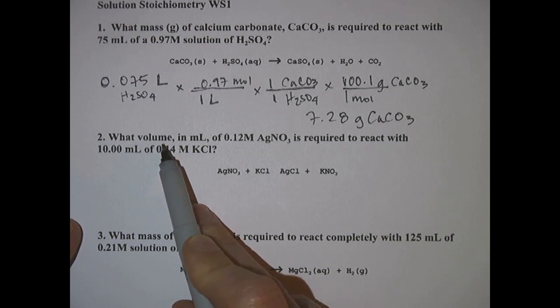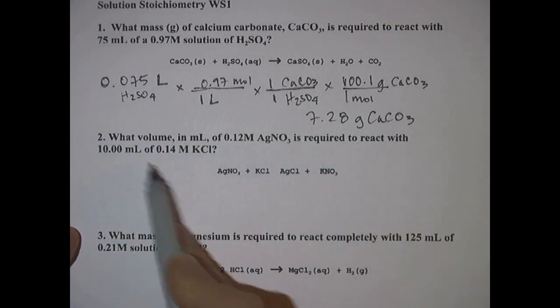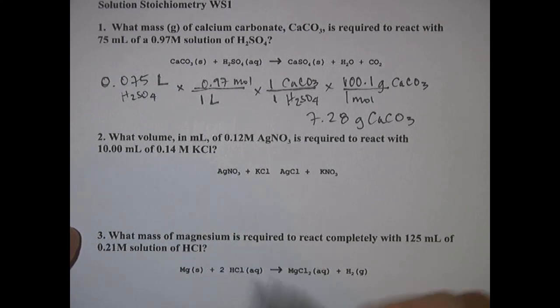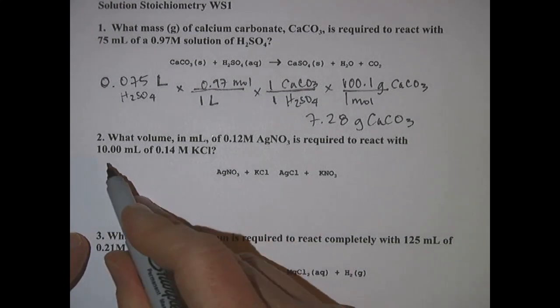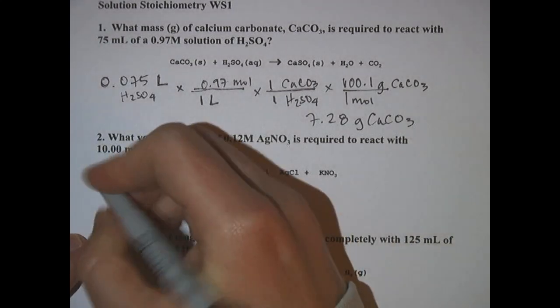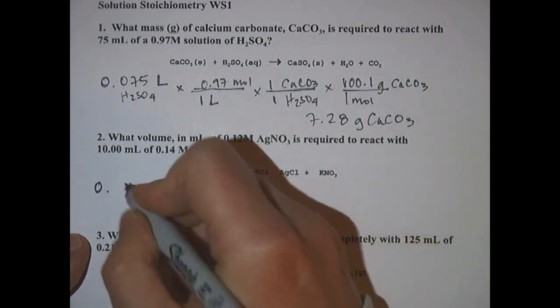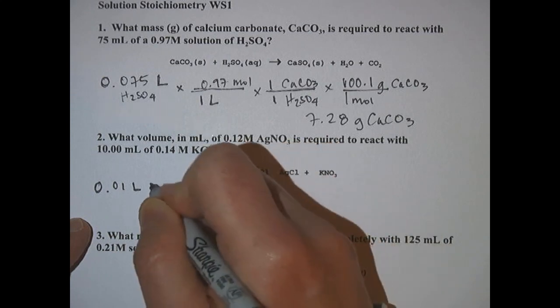Next problem: what volume of 0.12 molar silver nitrate is required to react with 10 milliliters of 0.14 molar potassium chloride. This problem is like the third example where you're going to do liters of one thing to liters of something else. So start with our 10 milliliters of potassium chloride, that's 0.01 liters KCl.